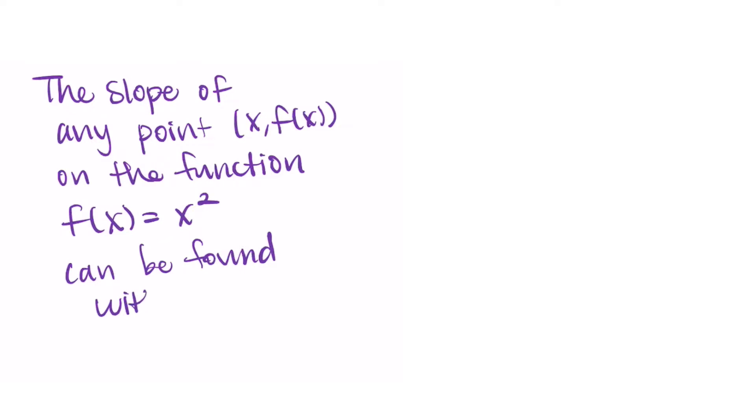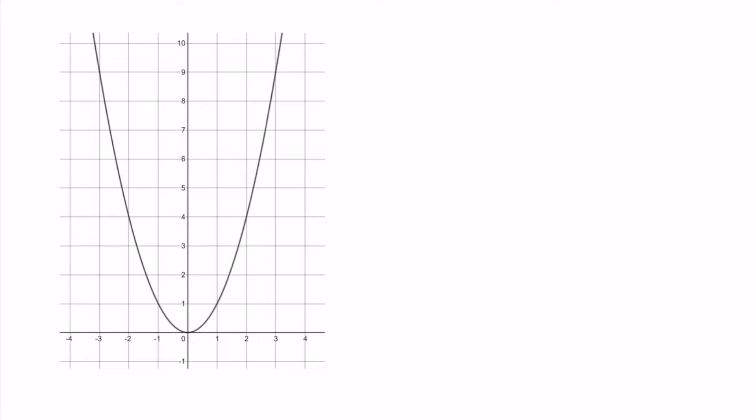Writing this out formally, this means that the slope of any point x, f of x on the graph of f of x equals x squared can be found using the formula f prime of x equals 2x. So the slope at any point on the graph is found by 2x.